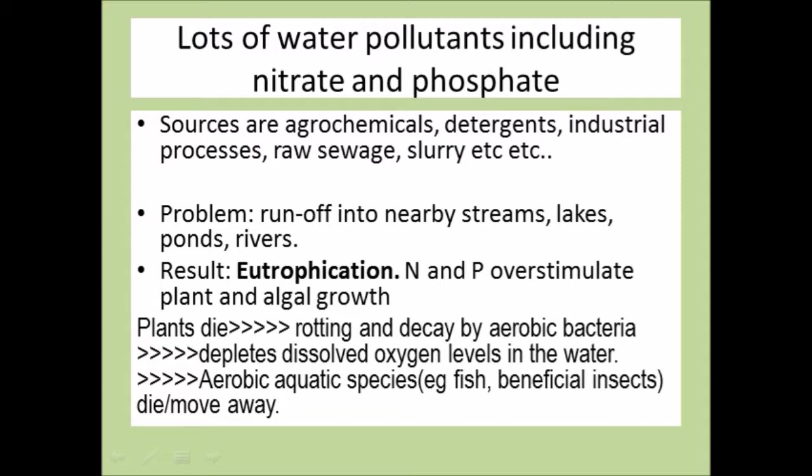So where do these nitrates and phosphates come from? Well, lots of different sources, because of course nitrogen and phosphorus form part of all living organisms. And so you'll find nitrate and phosphate levels may be high due to raw sewage or slurry. Slurry is from farms or from faeces from animals running off into nearby streams or rivers or ponds or lakes. And also agrochemicals themselves. So nitrate fertilizer, for instance, is commonly used.